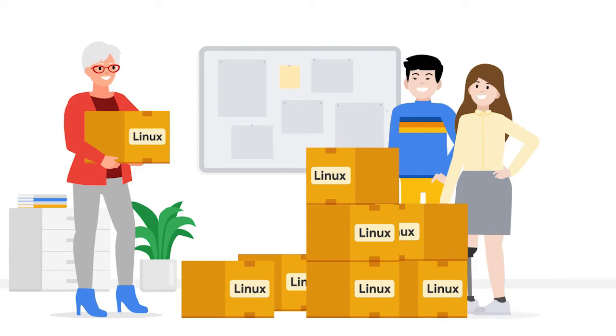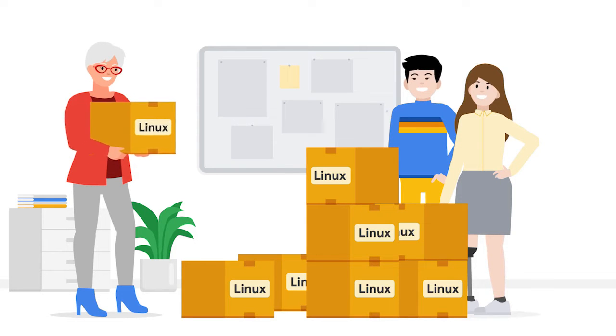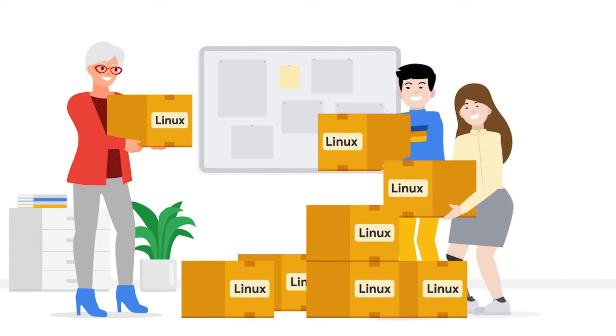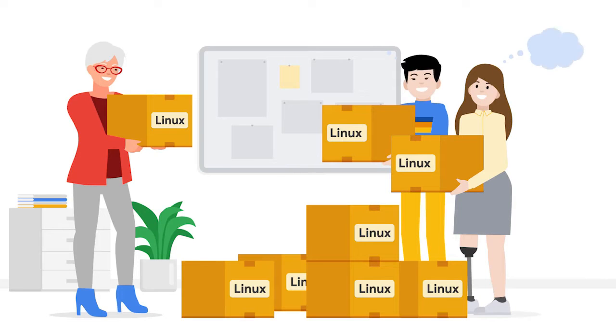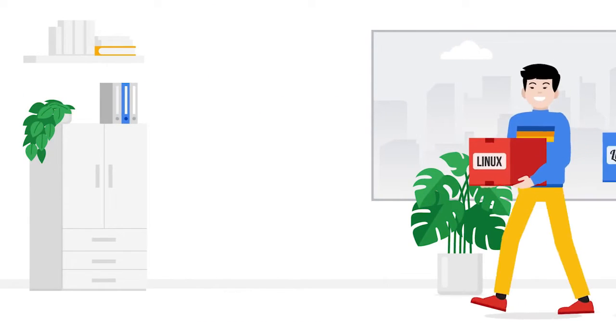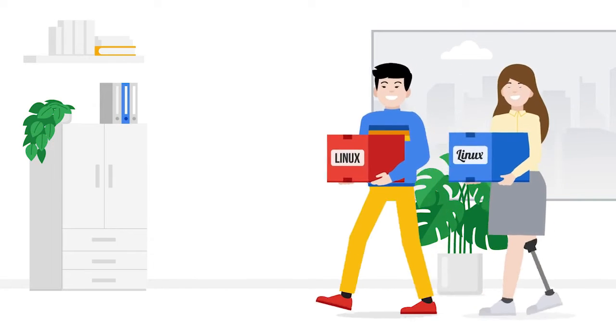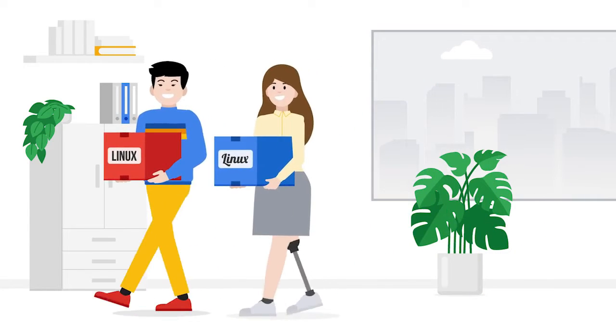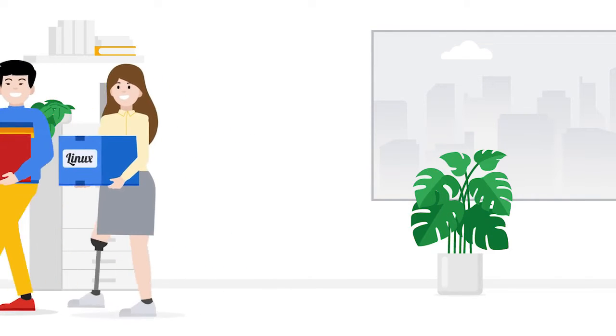Now that you've learned the history behind Linux, let's take a look at what makes Linux unique. Linux is open source, meaning anyone can have access to the operating system and the source code. Linux and many of the programs that come with it are licensed under the terms of the GNU public license, which allows you to use, share, and modify them freely. Thanks to Linux's open source philosophy and strong feature set, an entire community of developers has adopted this operating system, collaborating on projects and advancing computing together.